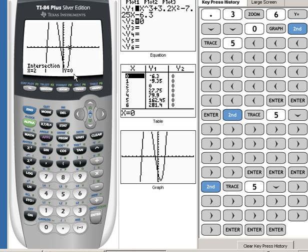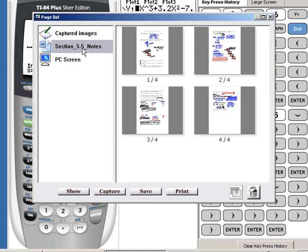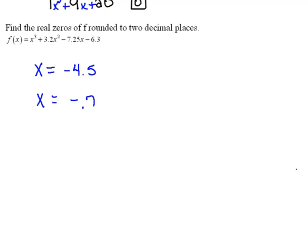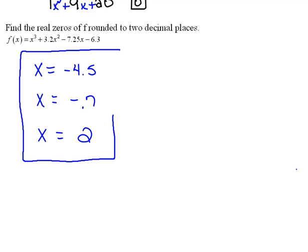Which again is an x-intercept. So now over here to answer my question, we had an x-intercept at negative 4.5, we found one at negative 0.7, and we found another at 2. So now we have our three x-intercepts, which is the maximum number of zeros we could have.